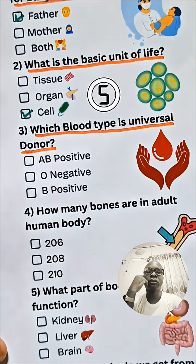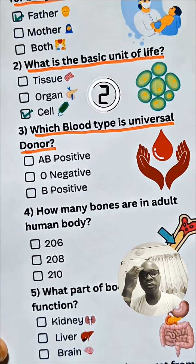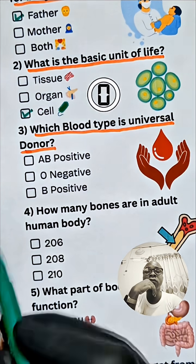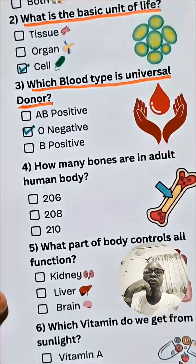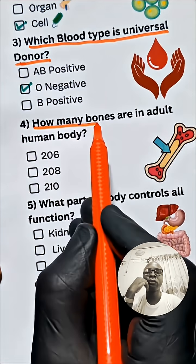Question 3: Which blood type is the universal donor? Option B: O negative.